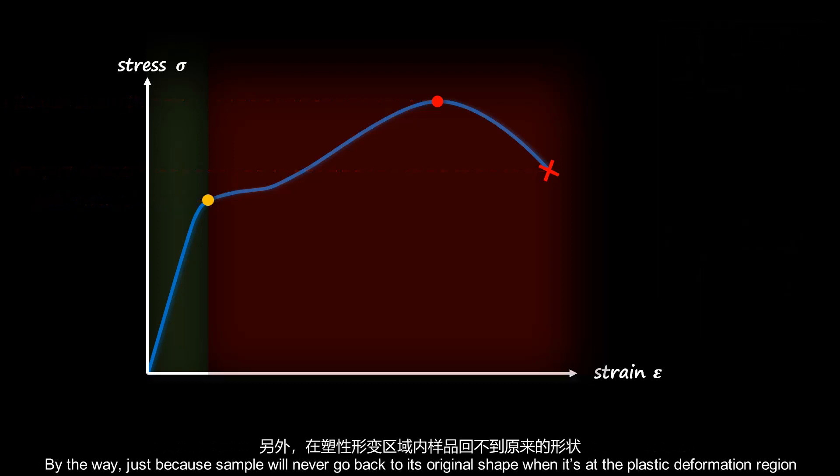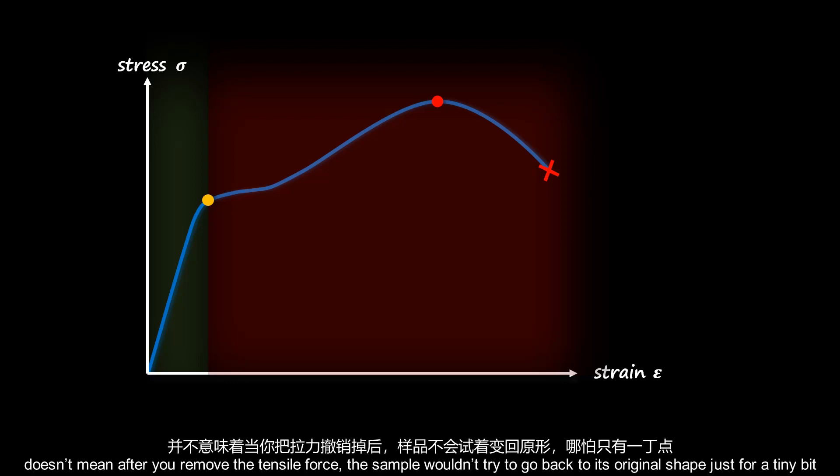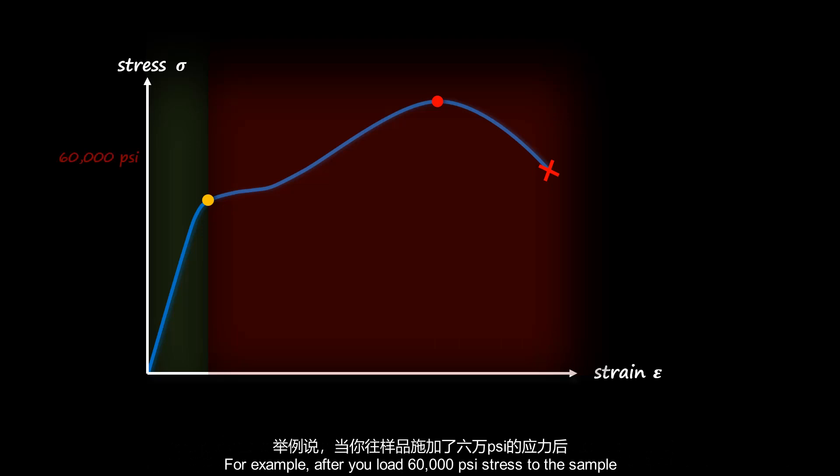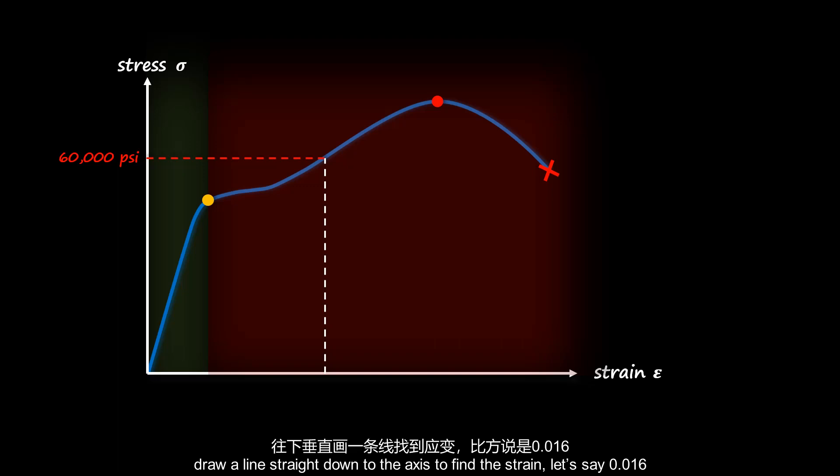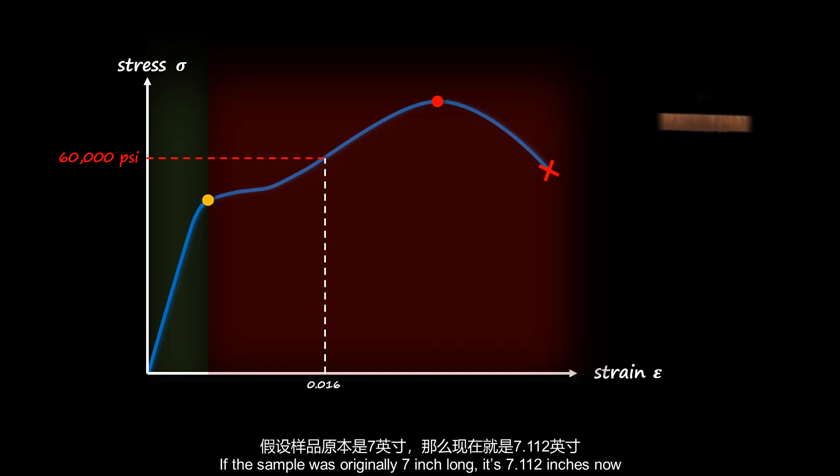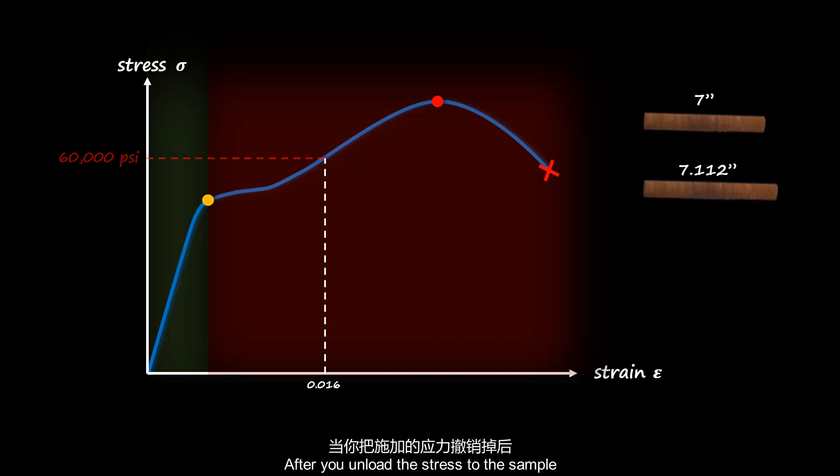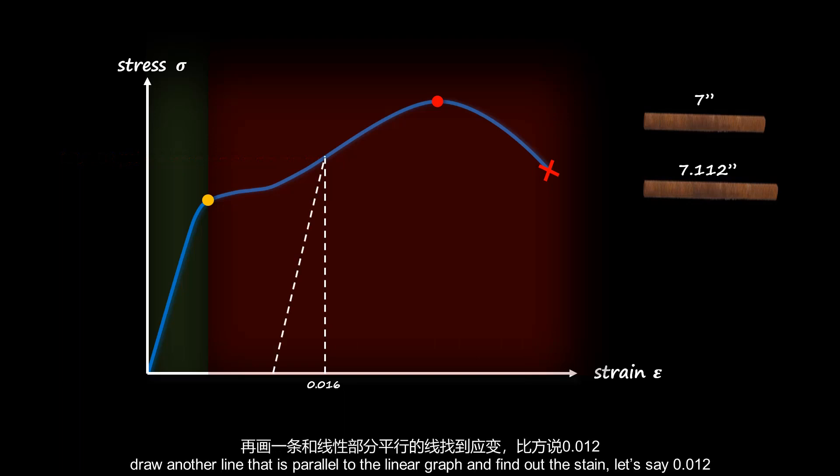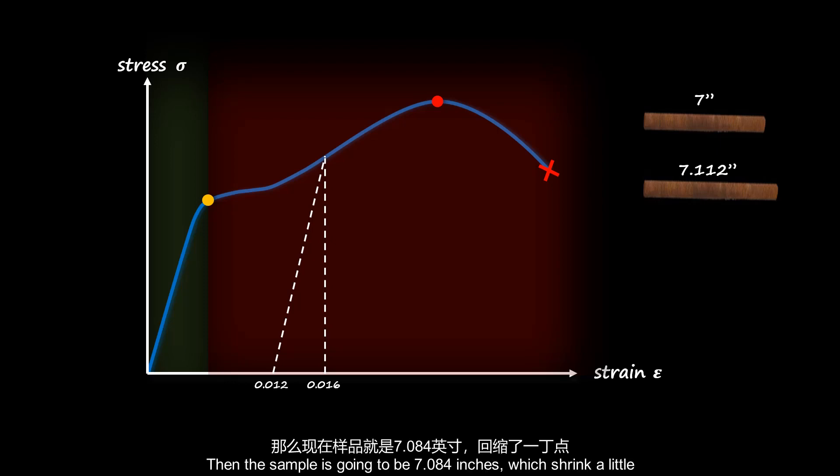By the way, just because the sample will never go back to its original shape when it's at the plastic deformation region, doesn't mean after you remove the tensile force, the sample won't try to go back to its original shape just for a little bit. For example, after you load 60,000 psi stress to the sample, draw a line straight down to the axis and find the strain, let's say it's 0.016. If the sample was originally 7 inches long, it's 7.112 inches now. After you unload the stress to the sample, draw another line that is parallel to the linear graph and find out the strain, let's say 0.012. Then the sample is going to be 7.084 inches, which shrinks a little.